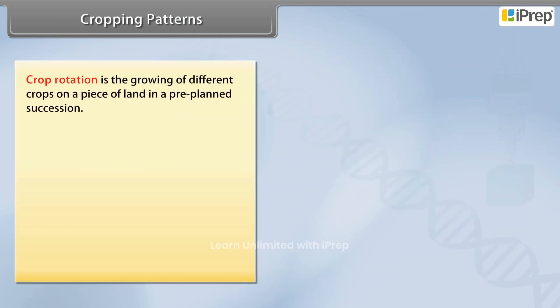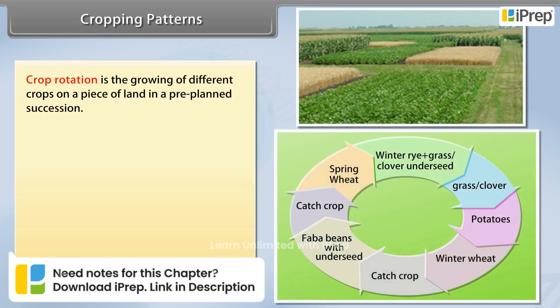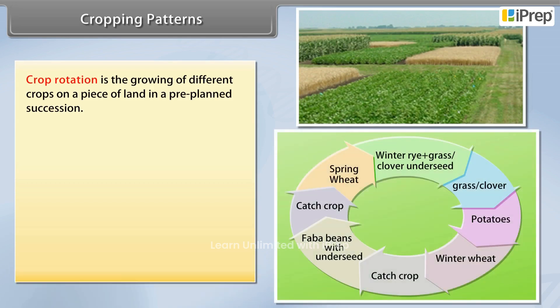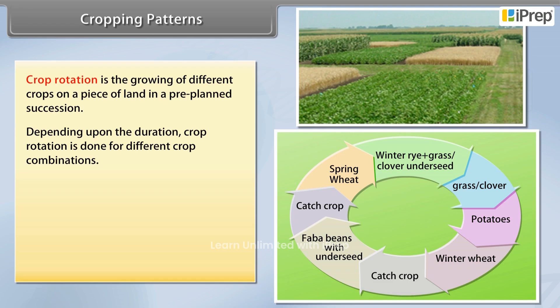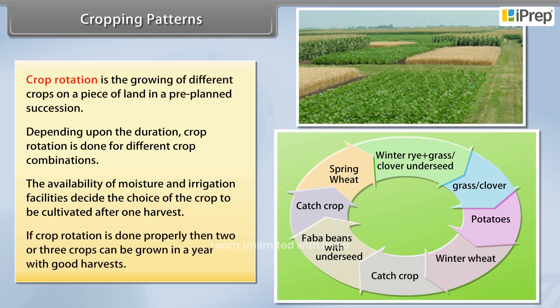Crop rotation is the growing of different crops on a piece of land in a pre-planned succession. Depending upon the duration, crop rotation is done for different crop combinations. The availability of moisture and irrigation facilities decides the choice of crop to be cultivated after one harvest. If crop rotation is done properly, two or three crops can be grown in a year with good harvests.